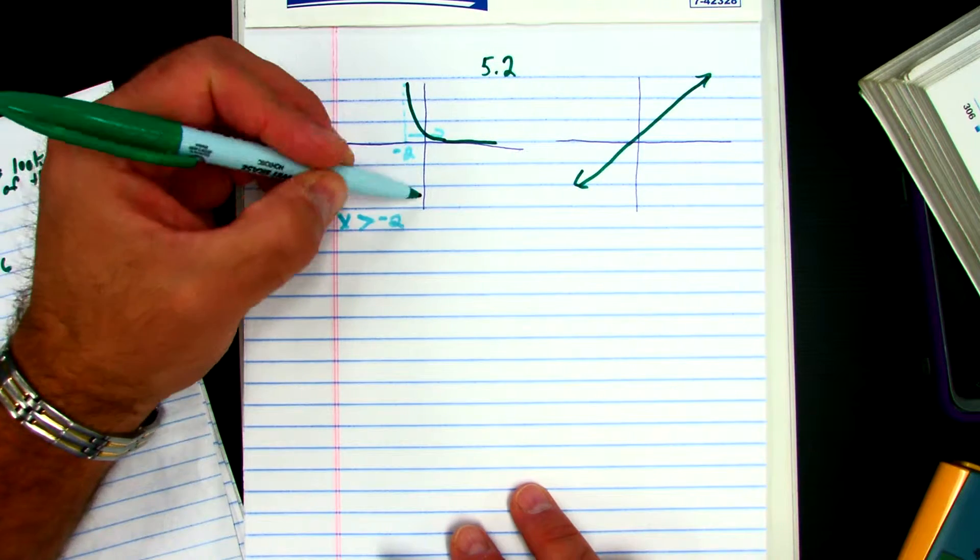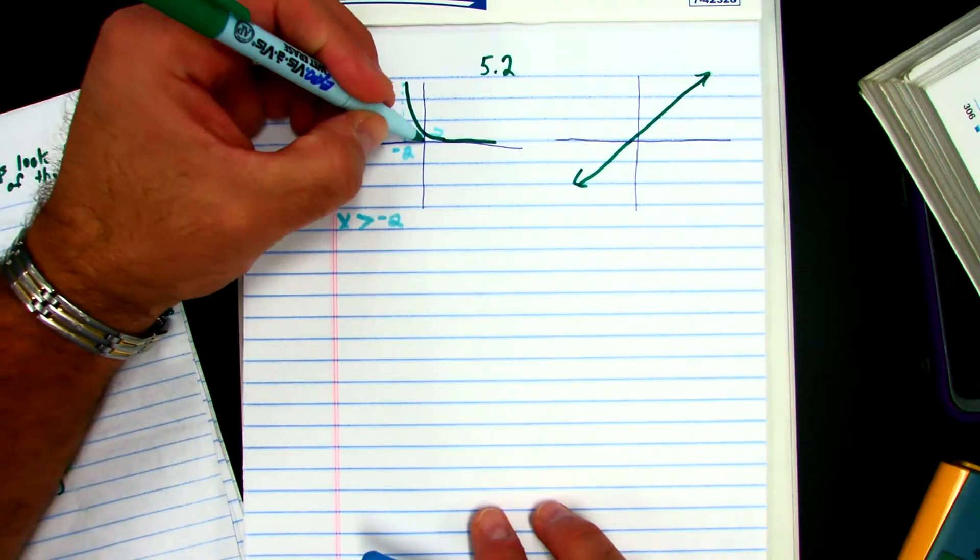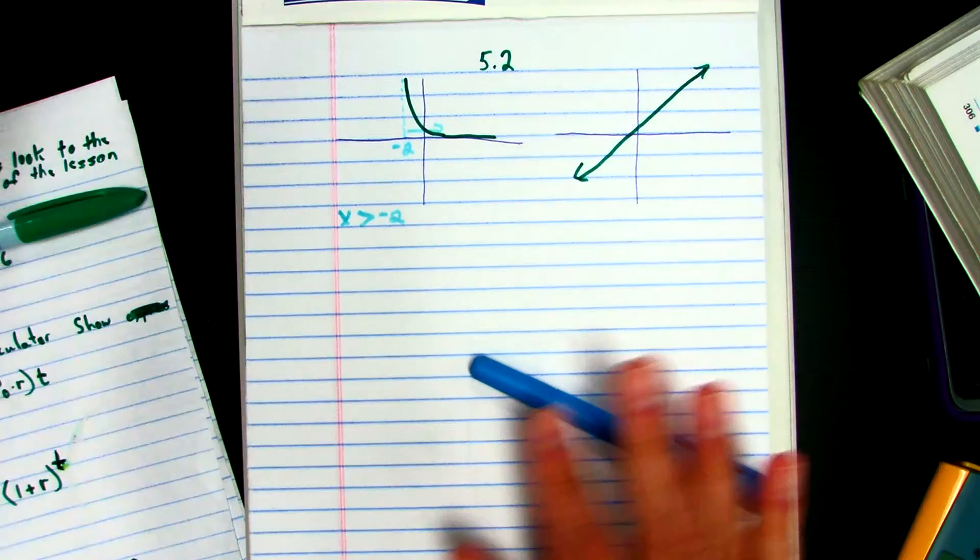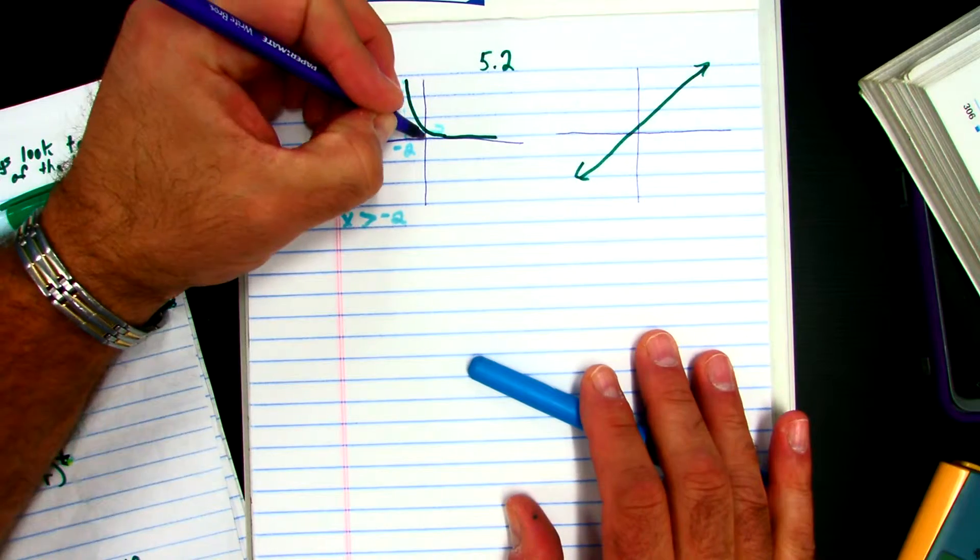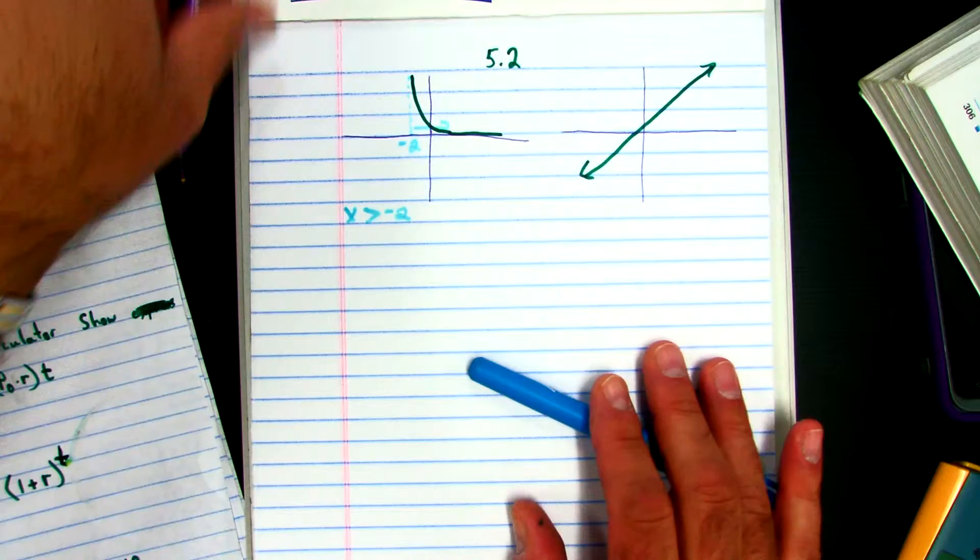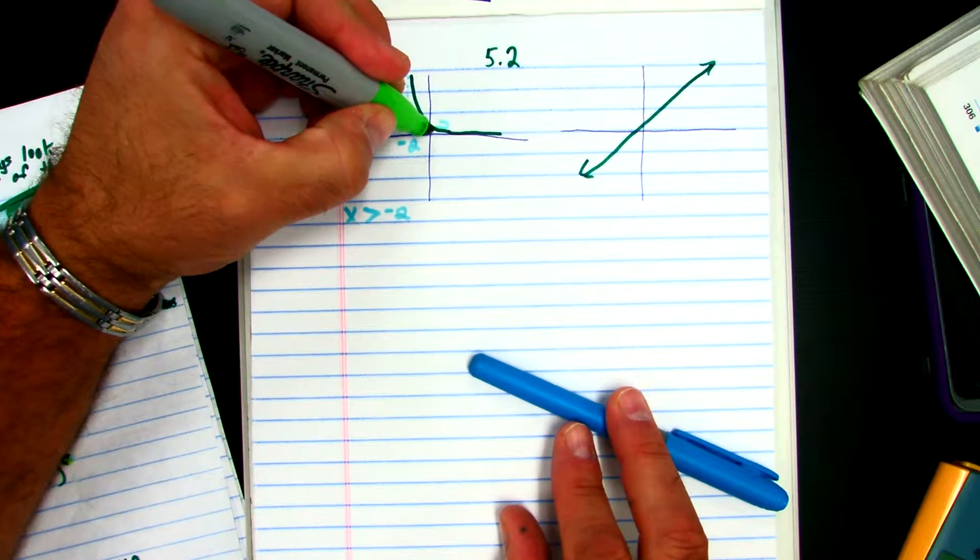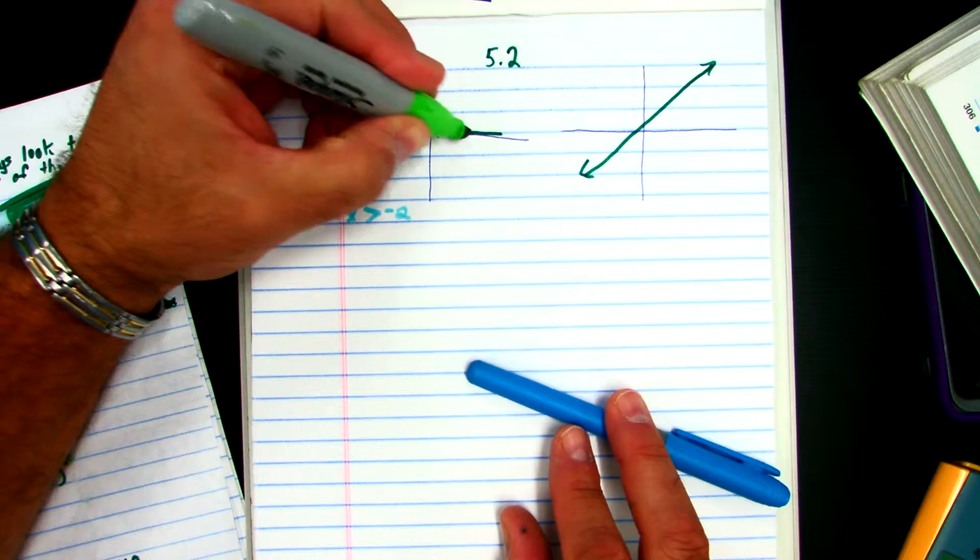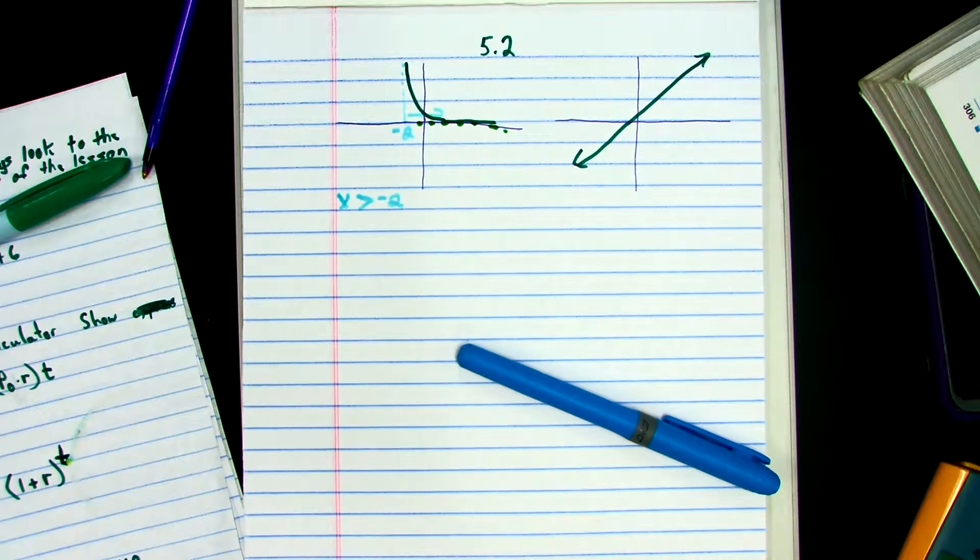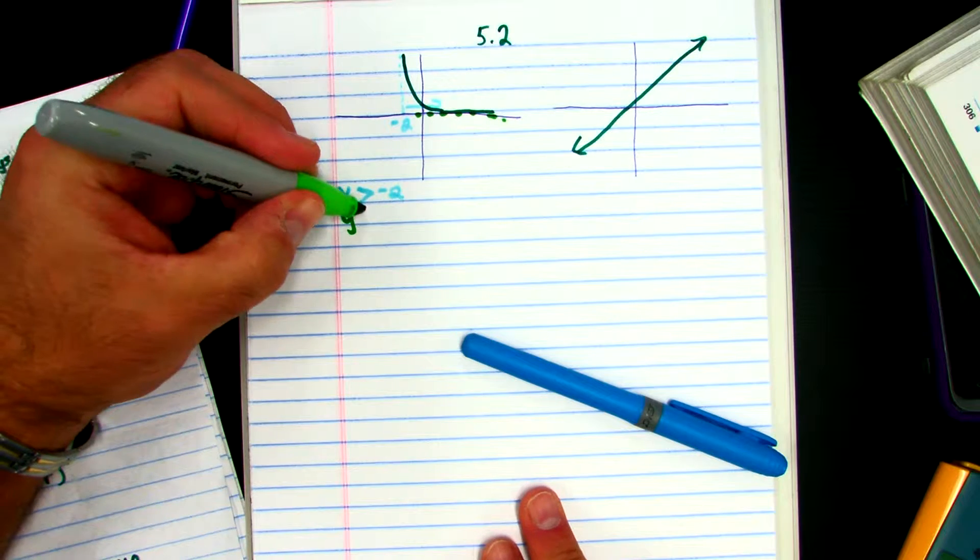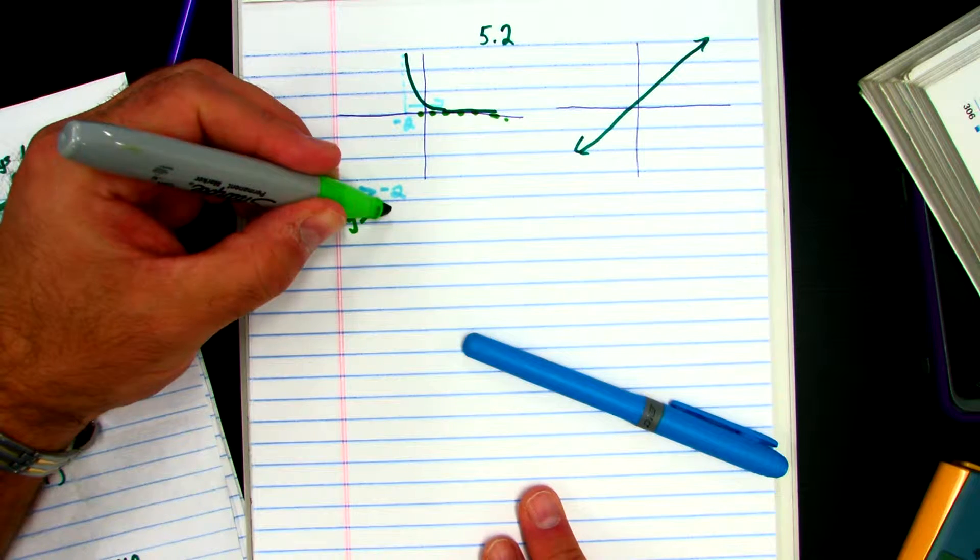So all of my Y answers must be greater than 0. And the Y answers are called my range. So I go ahead and I put the dotted line. I know it has to be higher than this. So I know all of my Y's are greater than 0.